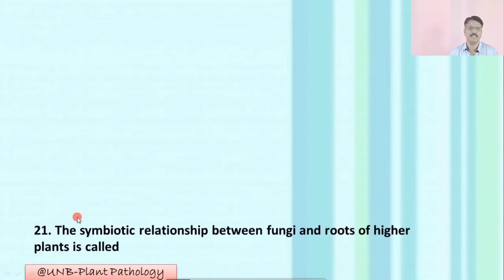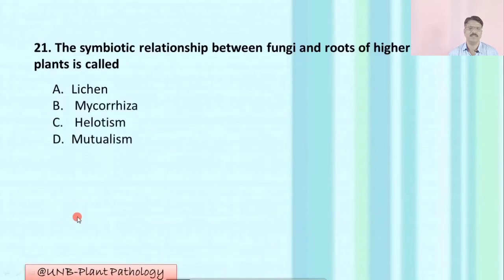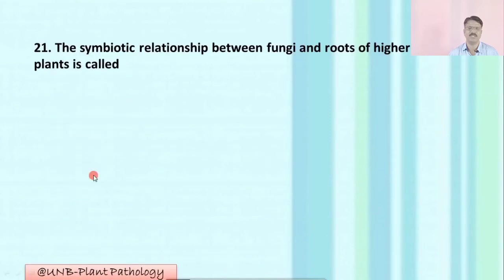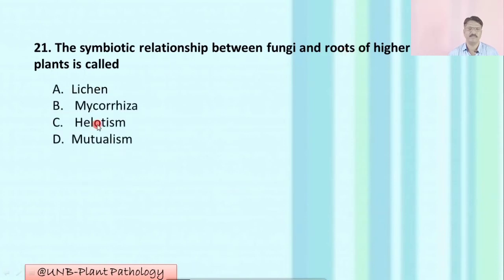Question number twenty-one: The symbiotic relationship between fungi and roots of higher plants is called — A: lichen; B: mycorrhizae; C: holosteum; D: mutualism. The correct option is B: mycorrhizae.